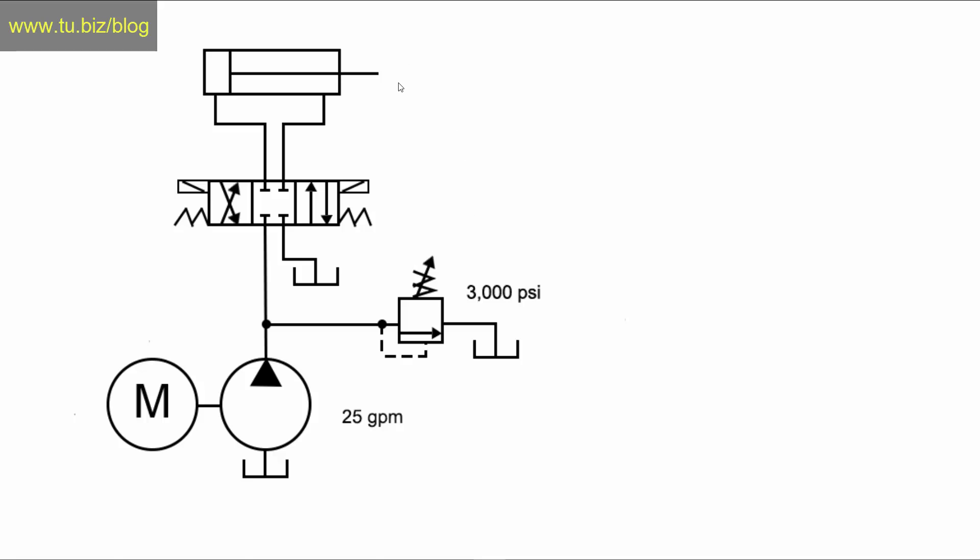And you have 3000 PSI in order to move the load that you require. If you lower the pressure, it's just not going to move the load that it needs to move. So we establish that you need 25 GPM and you need 3000 PSI.